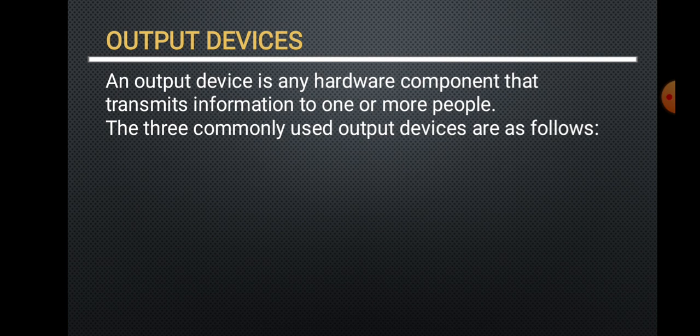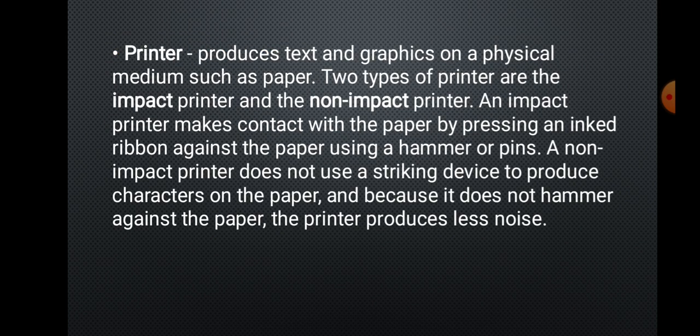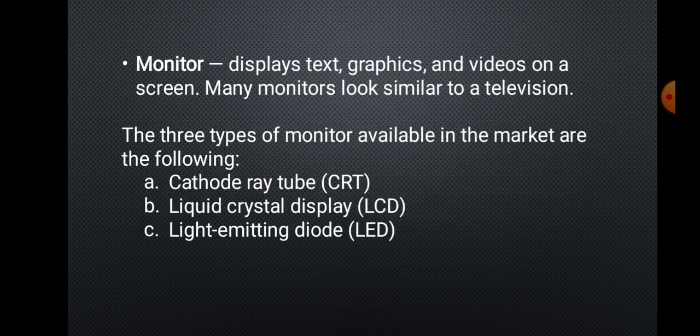An output device is any hardware component that transmits information to one or more people. Three commonly used output devices are: the printer, which produces text and graphics on a physical medium such as paper — with impact printers pressing an ink ribbon against the paper, and non-impact printers not using a striking device; and the monitor, which displays text, graphics, and videos on a screen. Many monitors look similar to a television.